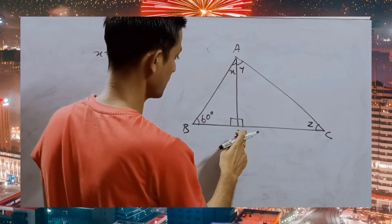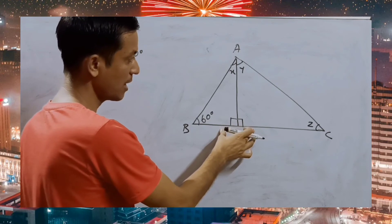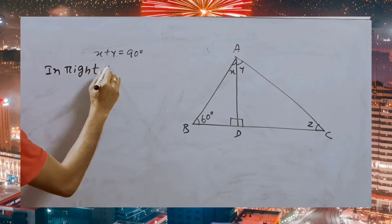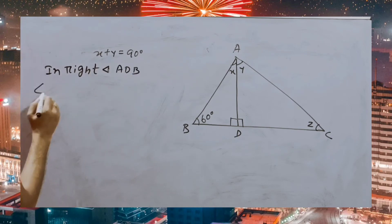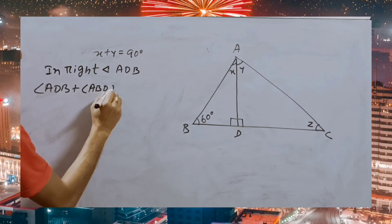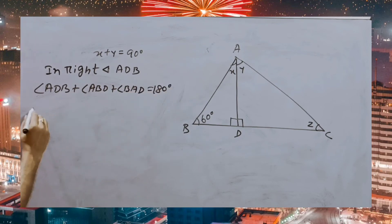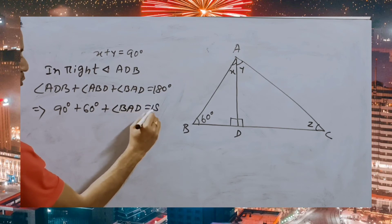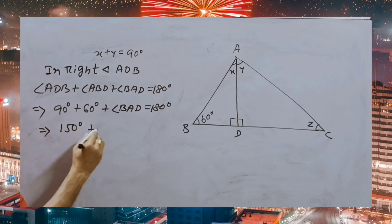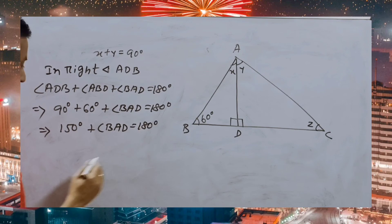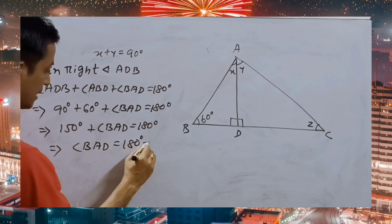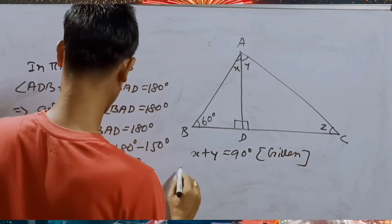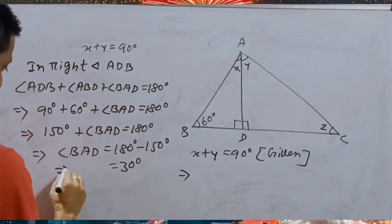X plus Y equals 90 degrees is given, meaning both angles sum to 90 degrees — that means it forms a straight line with two right angles. In right triangle ADB, angle ADB plus angle ABD plus angle BAD equals 180 degrees. ADB is 90 degrees and ABD is 60 degrees, so 150 degrees plus angle BAD equals 180 degrees. Therefore angle BAD equals 30 degrees. BAD is X, so X is 30 degrees.